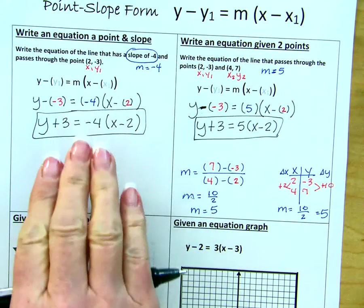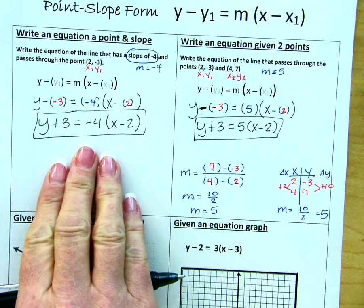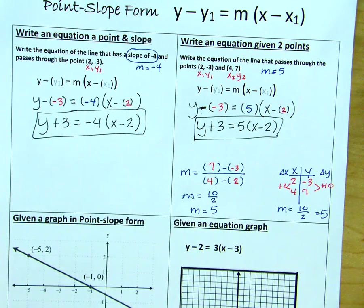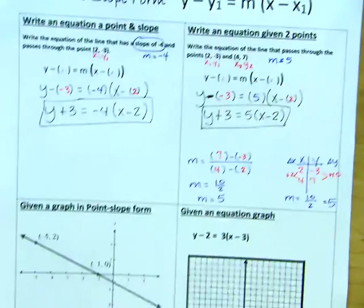So here we've had an example of when they give you just slope and a point. When they give you two points, you must find your own slope. And then do the same thing you did in the first example.